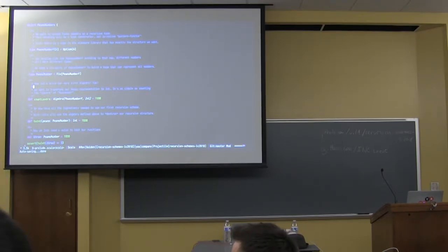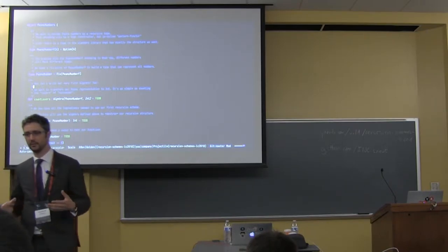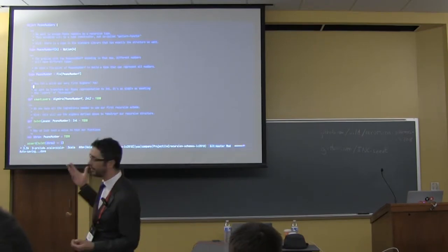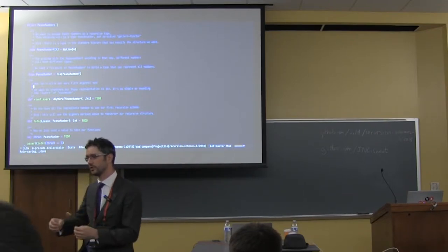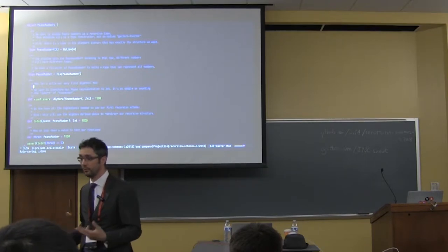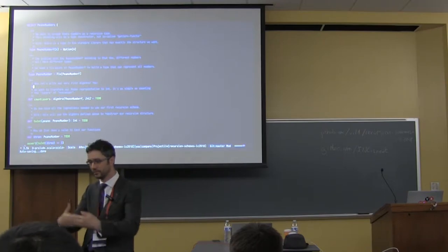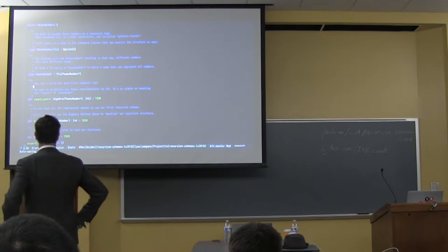So basically fix is a type that allows you to cut the recursion at the type level. Because here we are using option. So for example, the number two will be represented as option of option of nothing. And the number one will be option of nothing. So you cannot have one single type that references all these types. So you need a fix. And fix is just the name of the thing.